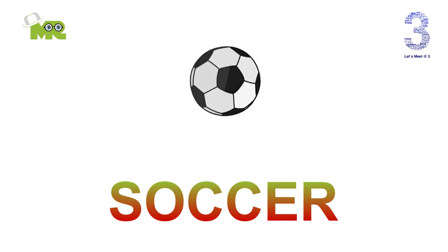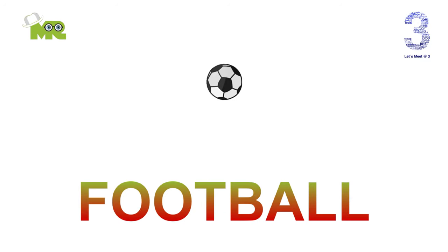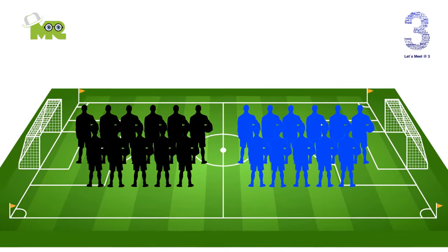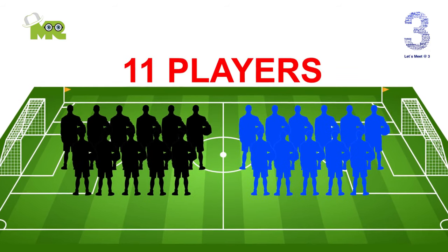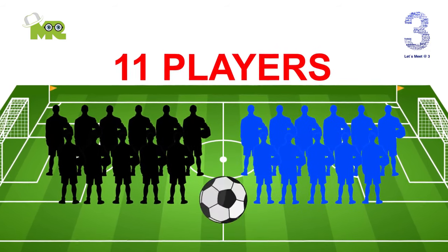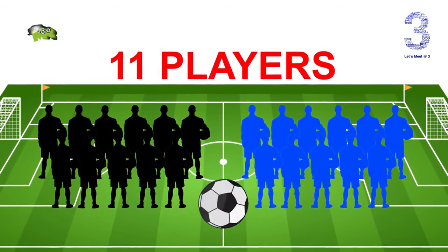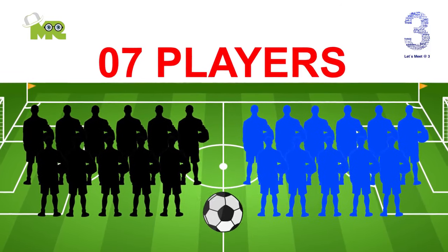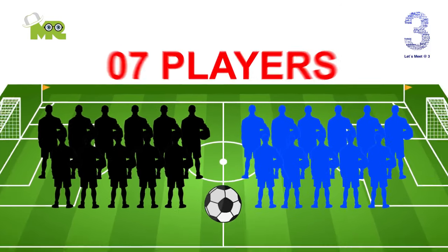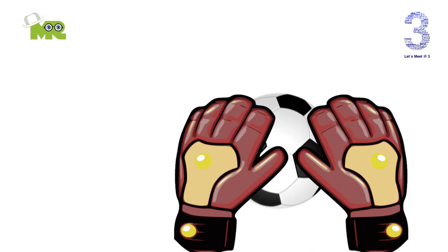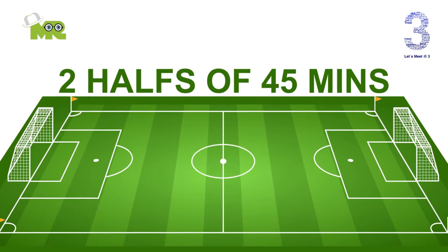Soccer, also known as football, is a team sport played between two teams of 11 players with a spherical ball. A minimum of seven players are needed to constitute a match. The primary rule of soccer is that players cannot touch the ball with their hands or arms while the ball is in play, but goalkeepers can touch the ball if they are in their goal box.